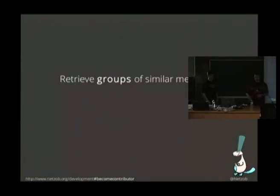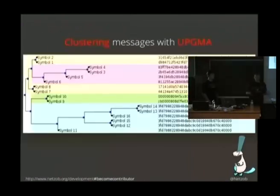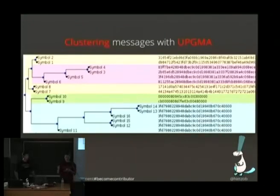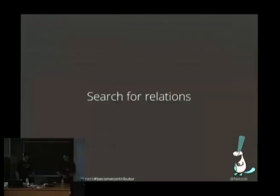The next step is to regroup similar messages into specific groups. Taking TCP as an example, there are many types of messages distinguished by their flags. We want to automatically retrieve these different groups or commands. We use a clustering approach — specifically the UPGMA algorithm taken from the bioinformatics domain — and a similarity function to compare messages, allowing us to group similar messages together.